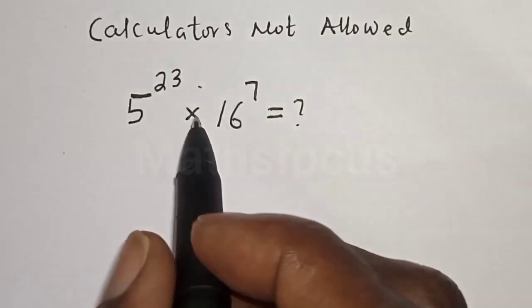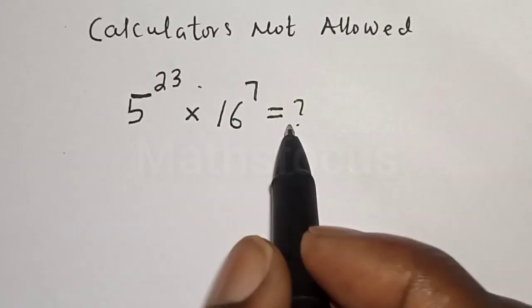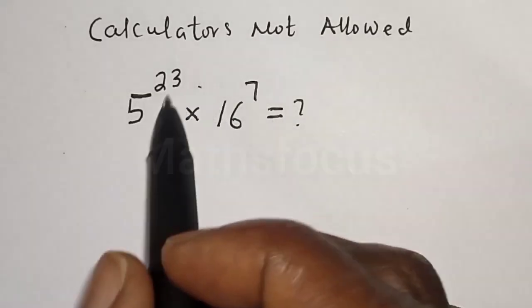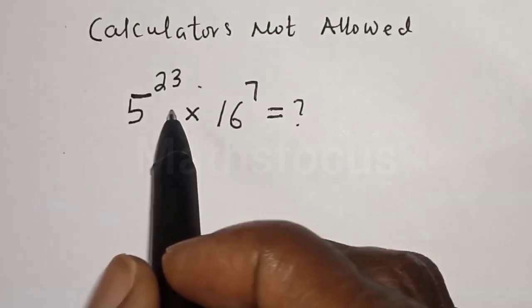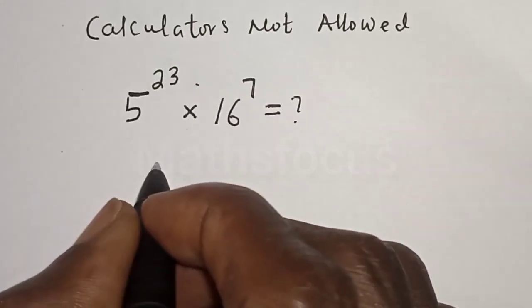5 raised to power 23 multiplied by 16 raised to power 7 is equal to what? We want to evaluate this math problem.